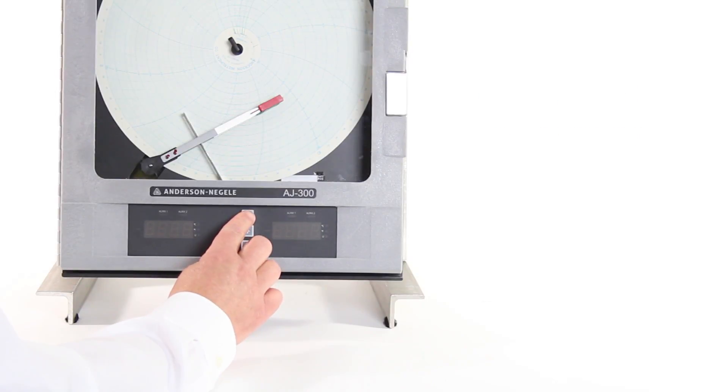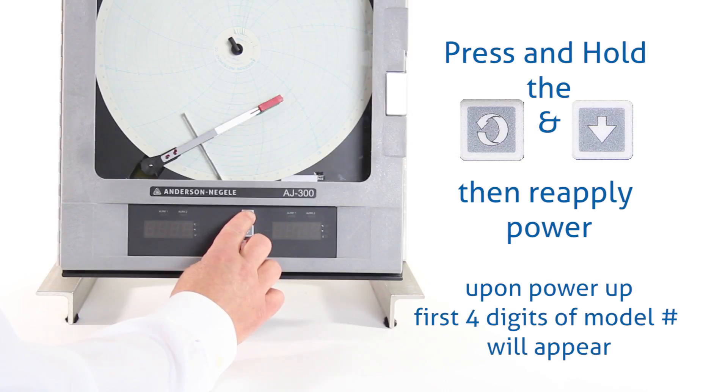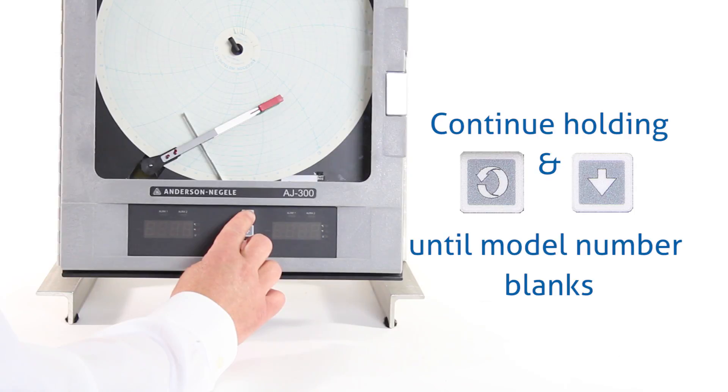While we're holding the keys, we're going to reapply power, but we're not going to hold the keys for very long. Once I turn the power back on, you're going to see the first four digits of the model number appear on the left-hand display. Once they appear, we're going to wait for them to go blank. As soon as they go blank, I'm going to release the keys and the first four digits should reappear, and that will put us into edit mode where we can re-enter the correct model number.